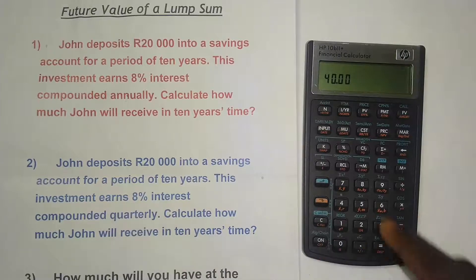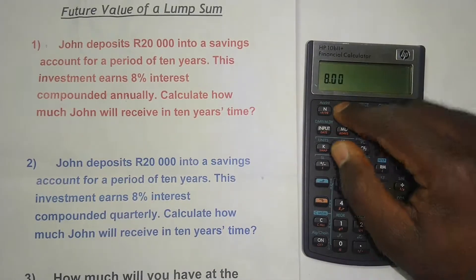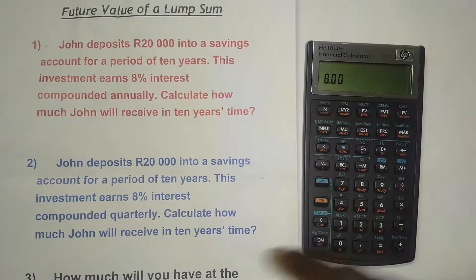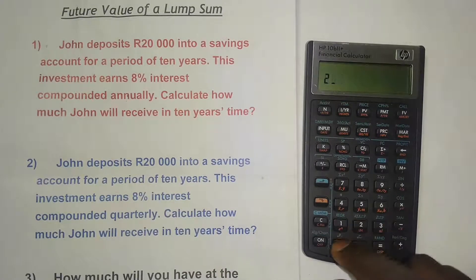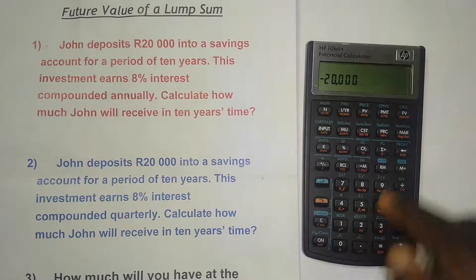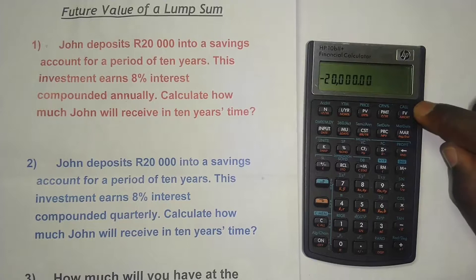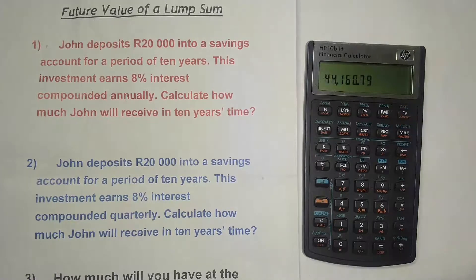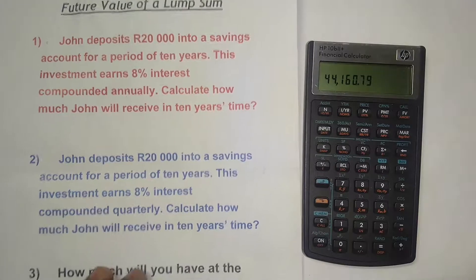Always use the orange button before N when compounding occurs more than once per year. Then enter the interest rate: press 8 and I/YR. Enter the present value of 20,000, press +/- to make it negative, then press PV. Finally press FV — the result is 44,160.79 rand. That's how much I'll receive in 10 years if I invest 20,000 rand at 8% interest compounded quarterly.